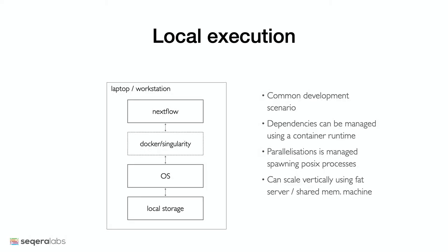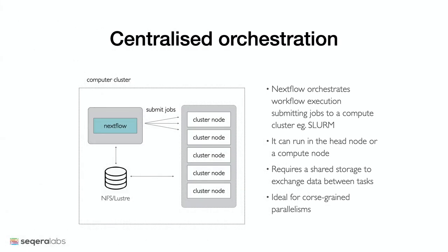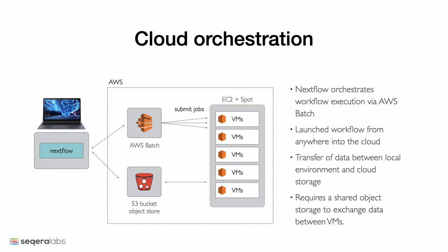I'd like to switch gears now and move from Nextflow syntax to deployment. Nextflow pipelines can be deployed on several different platforms: local execution with or without containers where Nextflow runs on the host operating system; as a centralized orchestrator submitting jobs to your cluster using NFS or shared file system; and cloud execution using AWS Batch or Google Life Sciences, which has become extremely popular over the last couple of years. Here each Nextflow task is submitted as a Batch API call, which is a managed service for pulling up VMs with the correct resources and running the jobs.